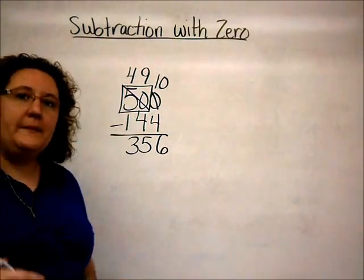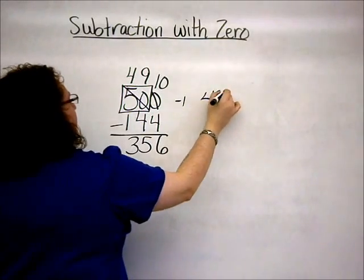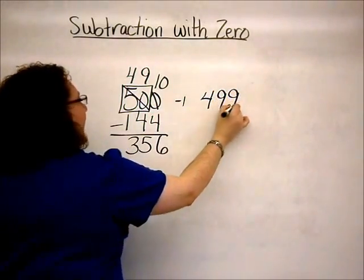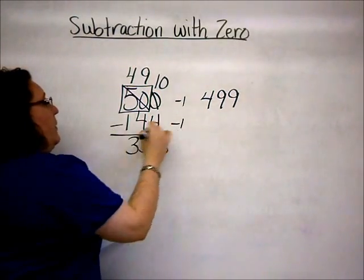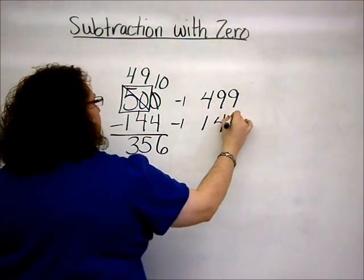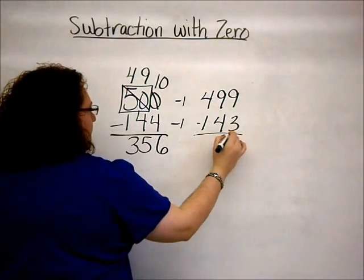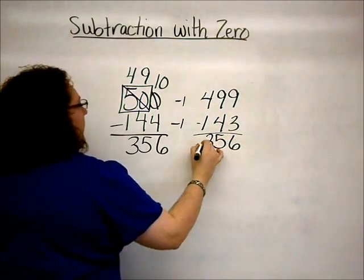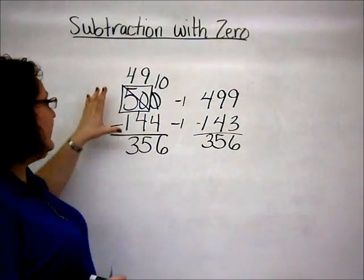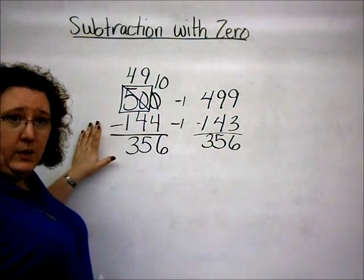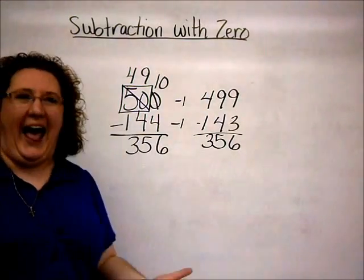Now, taking the same problem, let's look at it using the mental math. I have five hundred here. When I subtract one, I end up with four hundred ninety-nine. When I subtract one from one hundred forty-four, I end up with one hundred forty-three. When I subtract the new problem, I still end up with three hundred fifty-six. So again, I'm only subtracting one from both of the numbers to create the new problem, which doesn't involve any borrowing at all.